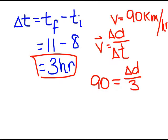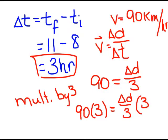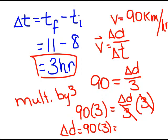We want change in distance. So, what do we do? Multiply all by 3. So, we get 90 times 3 equals the change in distance divided by 3 multiplied by 3. Our 3's cancel. That gives us our change in distance is going to be equal to 90 times 3 which is 270 kilometers.